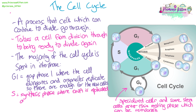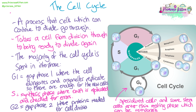S phase is next, and this is where DNA is replicated and also checked for errors. Then the final phase of interphase is G2, or gap phase two. This is where proteins that are needed for cell division are synthesized, and also ATP production increases, because we're going to need that energy to go through cell division.